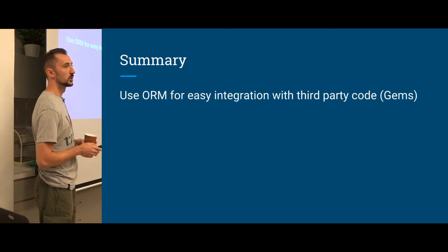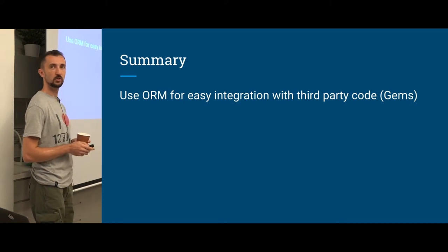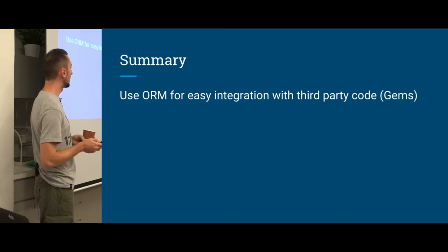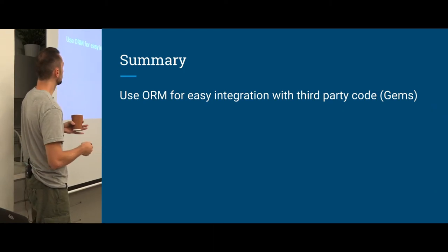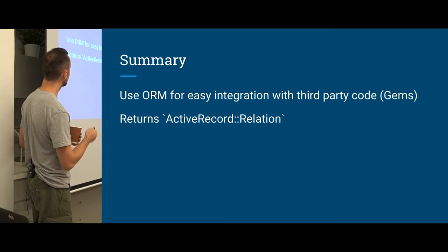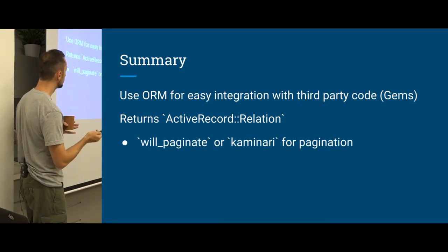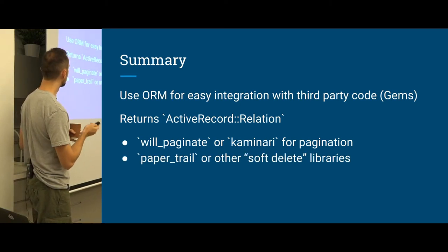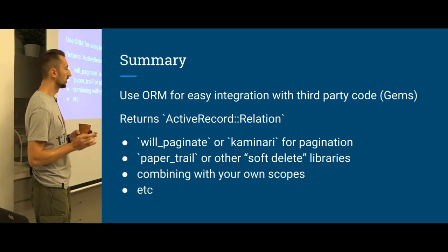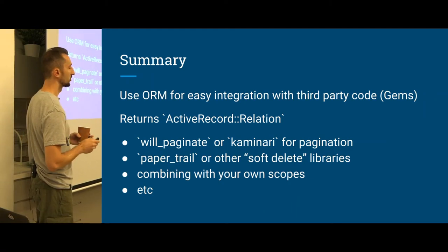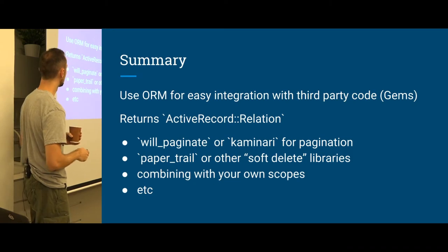ORM is very useful because our ecosystem has so many gems already using ActiveRecord. It can be a huge pain but also a big win — it's so easy to find a library that does what you need. Anything that returns an ActiveRecord relation is usually better than returning raw results because you can use gems for pagination, PaperTrail, soft delete libraries, and so on. For this reason, ORM is very useful even if you're doing a hacky query with a bunch of raw SQL — it still makes sense to wrap it with the ORM.